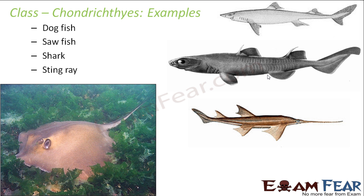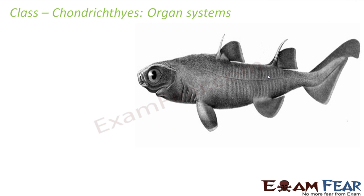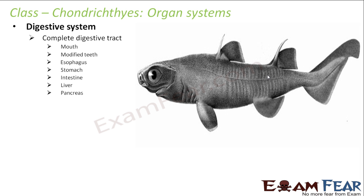Looking at the organ systems of cartilaginous fishes, the digestive system has a complete digestive tract with two openings and a hollow gut. It consists of the mouth, modified teeth — teeth are modified depending upon the food habits, whether for chewing or swallowing — along with the esophagus, stomach, and intestine.